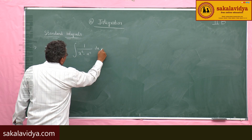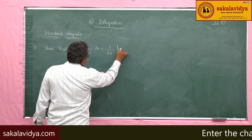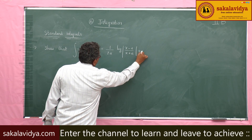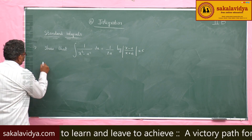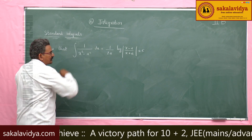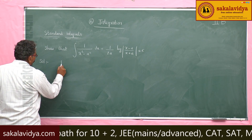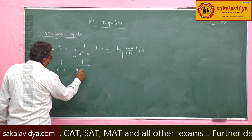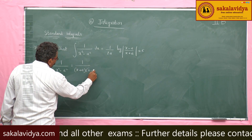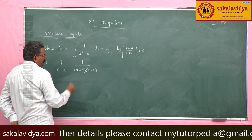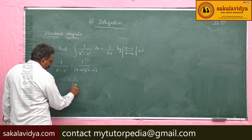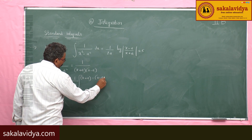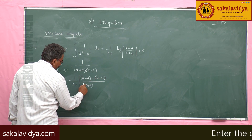Next, ∫1/(x² − a²) dx = (1/2a)·log|(x − a)/(x + a)| + c. For the solution, we find partial fractions of 1/(x² − a²) = 1/((x + a)(x − a)). Subtracting (x − a) from (x + a) gives 2a, so we write (1/2a)·[(x + a) − (x − a)] / [(x + a)(x − a)].